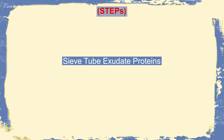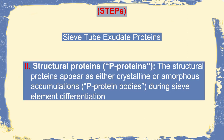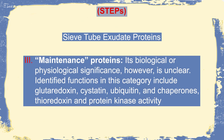There is another unique type of protein commonly called STEP — sieve tube exudate protein. This group of protein can be classified into three major types. Number one is enzymes, which mostly help in the metabolism of sugar, in the form of amylase. Second are structural proteins, which is P-protein — crystalline or amorphous — helping in the transport of sugar across the sieve tube. Third is maintenance protein, including glutathione, cystatin, ubiquitin, etc., which mainly help in maintaining the normal structure and function of the sieve tube.